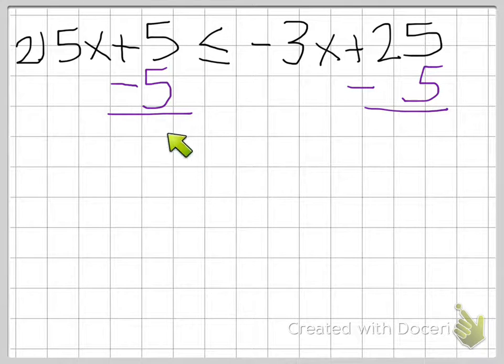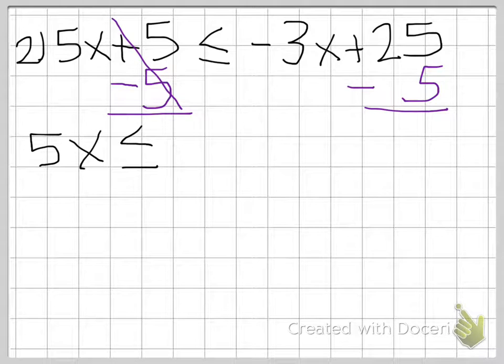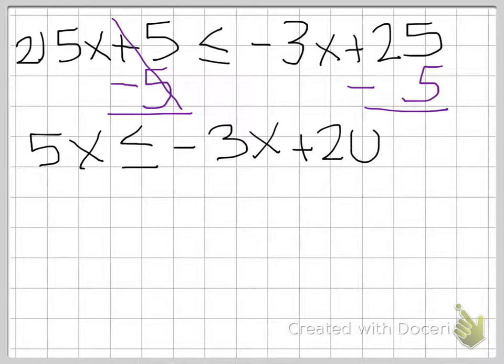So on the left side, we have 5 minus 5 is 0, so that goes away. So I'm going to start to rewrite the equation. And so now I have 5x is less than or equal to negative 3x and 25 minus 5 is positive 20.